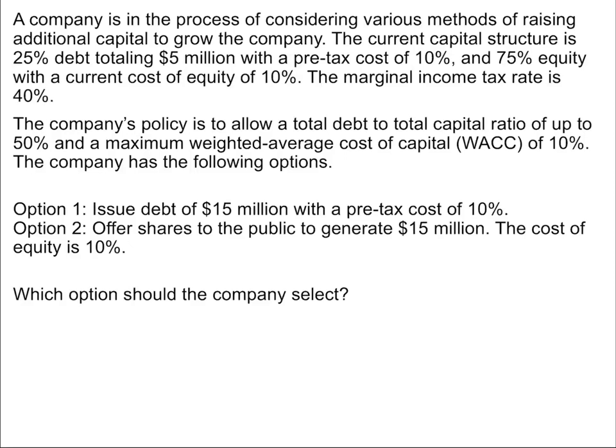Before we look at the choices, let's look at the information we have. There are two criteria we need to consider: the first is the weighted average cost of capital, with a maximum of 10%, and the other is that total debt can be up to 50% of total capital. Those are the two criteria we need to work within.